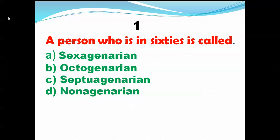Number one: a person who is in their 60s is called what? We see some choices — sexagenarian, octogenarian, septuagenarian, and nonagenarian. Sexagenarian is the right choice. A person who is between 60 to 69 years old is called a sexagenarian. So the first choice is the right answer.